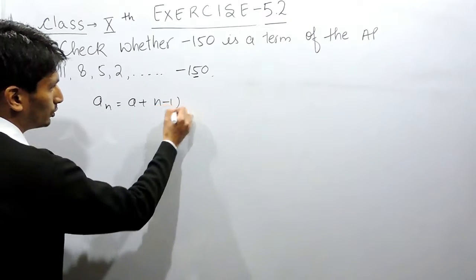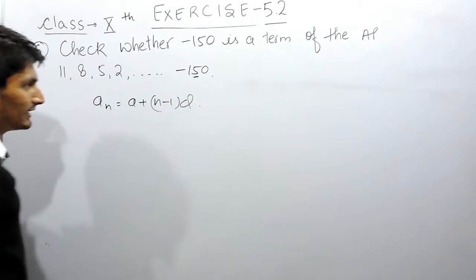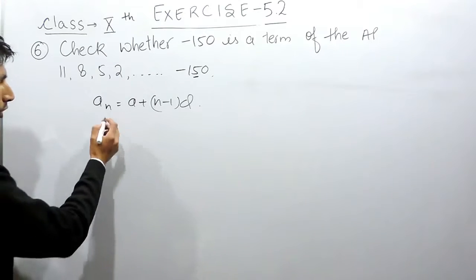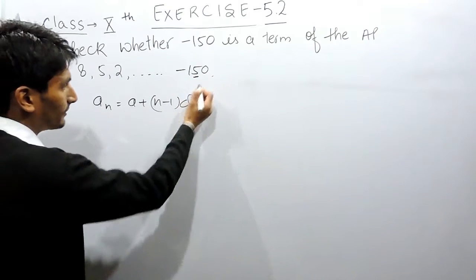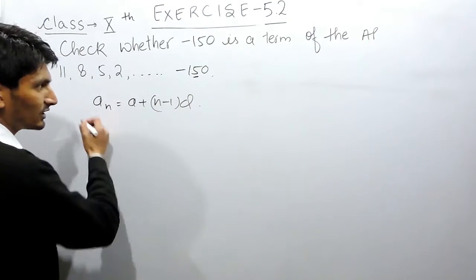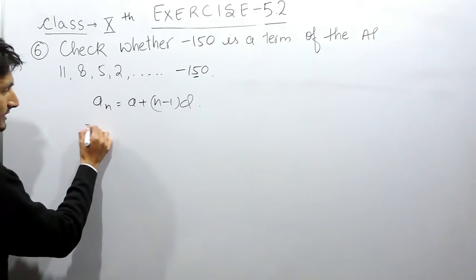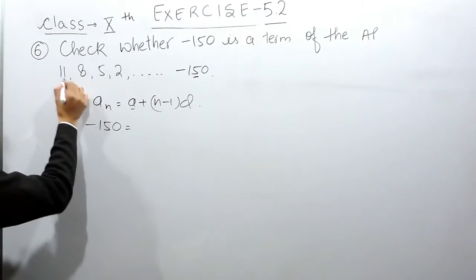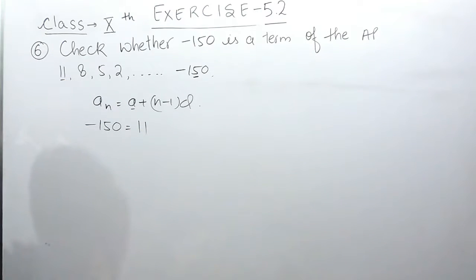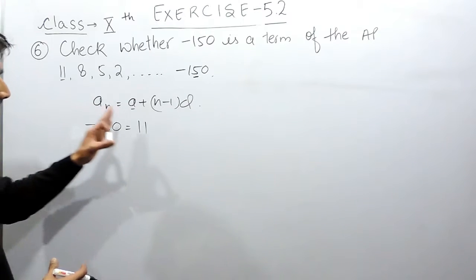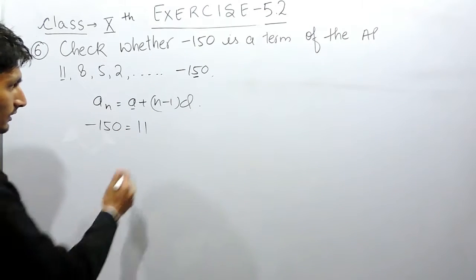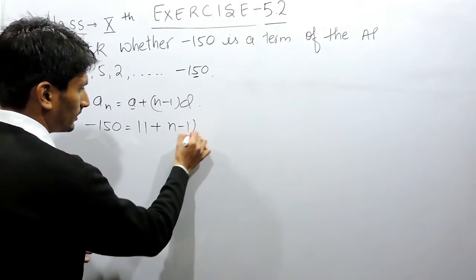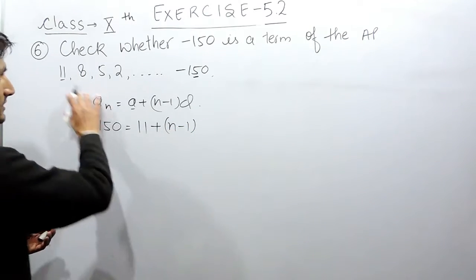The nth term in AP we know is equals to a plus (n minus 1) into d. Now if this is the nth term, it must satisfy this equation. So the nth term is given as -150. The first term in this case is given equals to 11, and the n we don't know.